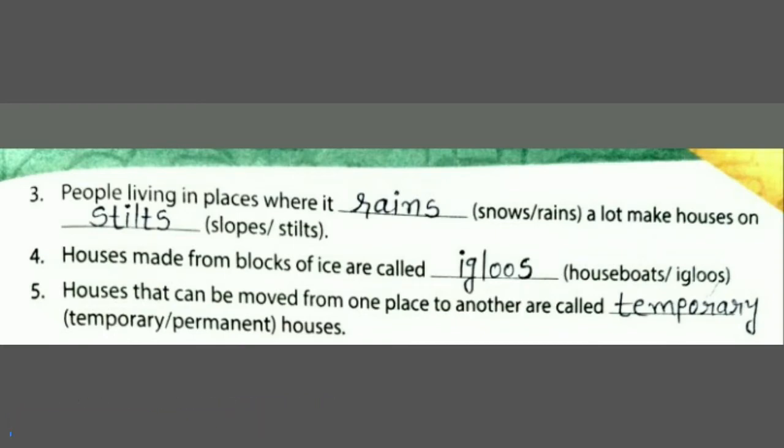Third blank: People living in places where it ___ a lot make houses on ___. Means जहां ज्यादा बारिस होती है, तो answer आएगा 'rains.' And make houses on — वहां stilt house बनाते हैं, तो answer आएगा 'stilts.' Complete sentence: People living in places where it rains a lot make houses on stilts.